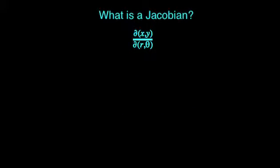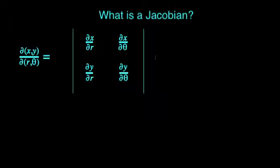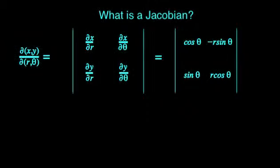Here, the Jacobian is the determinant of a two-by-two matrix containing four permutations of partial derivatives of Cartesian coordinates with respect to polar coordinates. Employing some algebra and a Pythagorean identity gives us the value of r for the Jacobian.